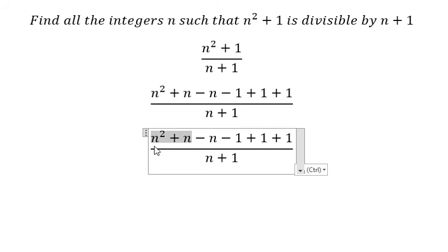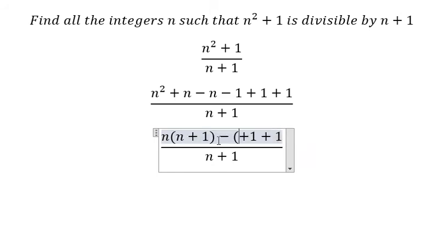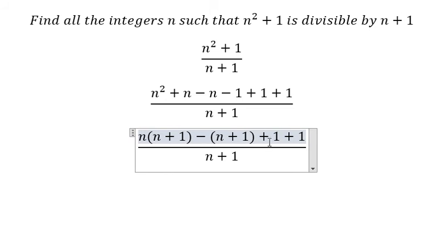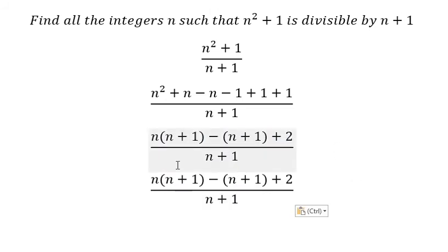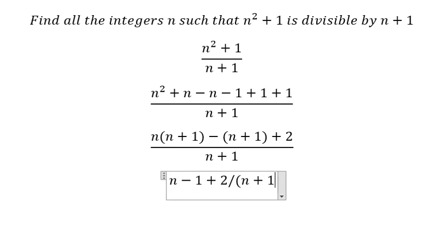We can do factorization: n minus 1, negative n, negative 1. We can do another factorization and we get n plus 1. This gives us number 2. So we have n plus 1 divided by n plus 1, and we get n minus 1 plus 2 over n plus 1.